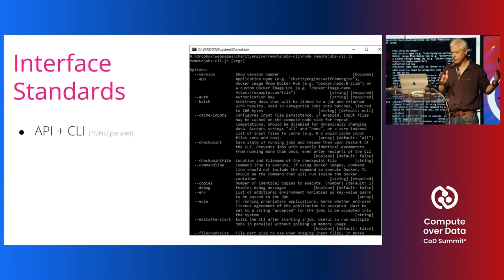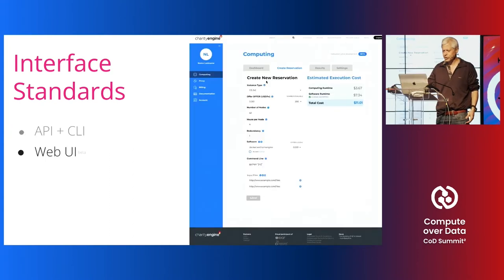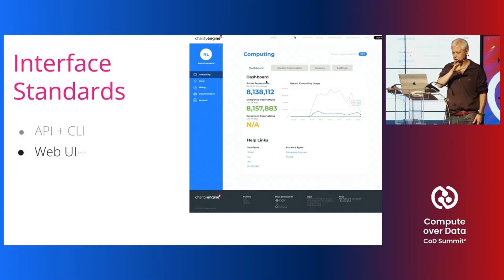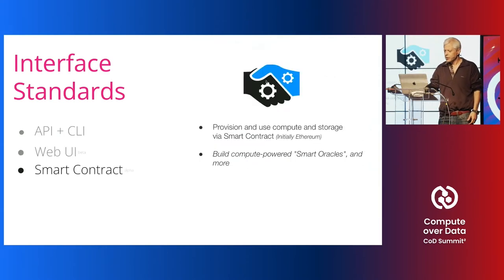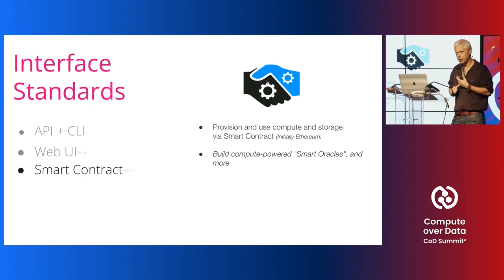We have a CLI so you can run jobs from the command line using familiar tools like GNU Parallel — it can feel like having a million CPUs right there on your desktop. We also have a web UI that lets you track and manage jobs. Additionally, we have a smart contract interface for provisioning and using compute resources and storage through a smart contract, initially developed for Ethereum. We're hoping to bring that to the Filecoin world as well, since the FVM is Ethereum-compatible.